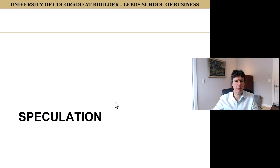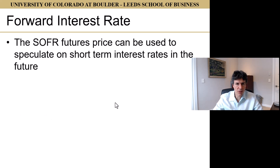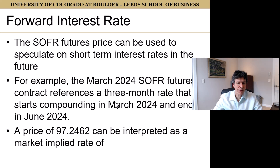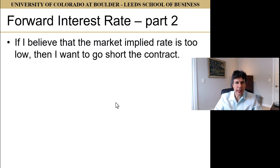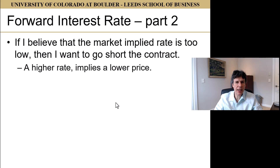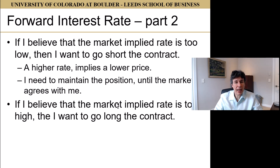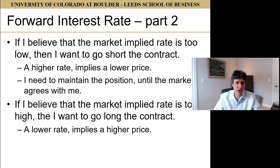We can use these contracts for speculation. The SOFR futures price can be used to speculate on short-term interest rates. The March 2024 contract references a three-month rate compounding from March 20th to June 18th, 2024. A price of 97.2462 implies a market rate of 2.7538. If I believe the market implied rate is too low, I go short — a higher rate implies a lower price. If I believe the rate is too high, I go long — a lower rate implies a higher price.